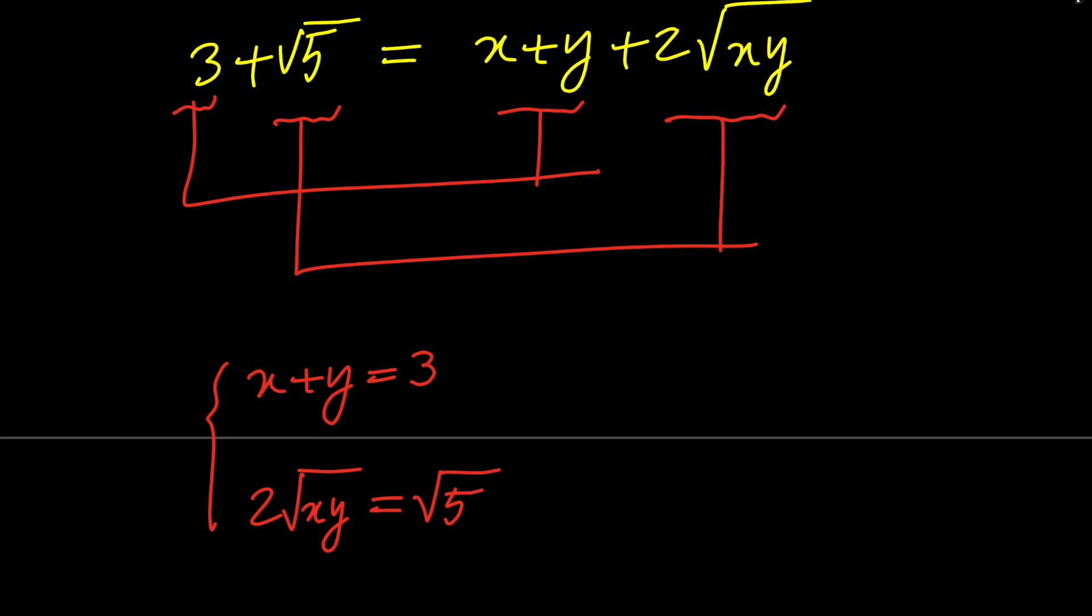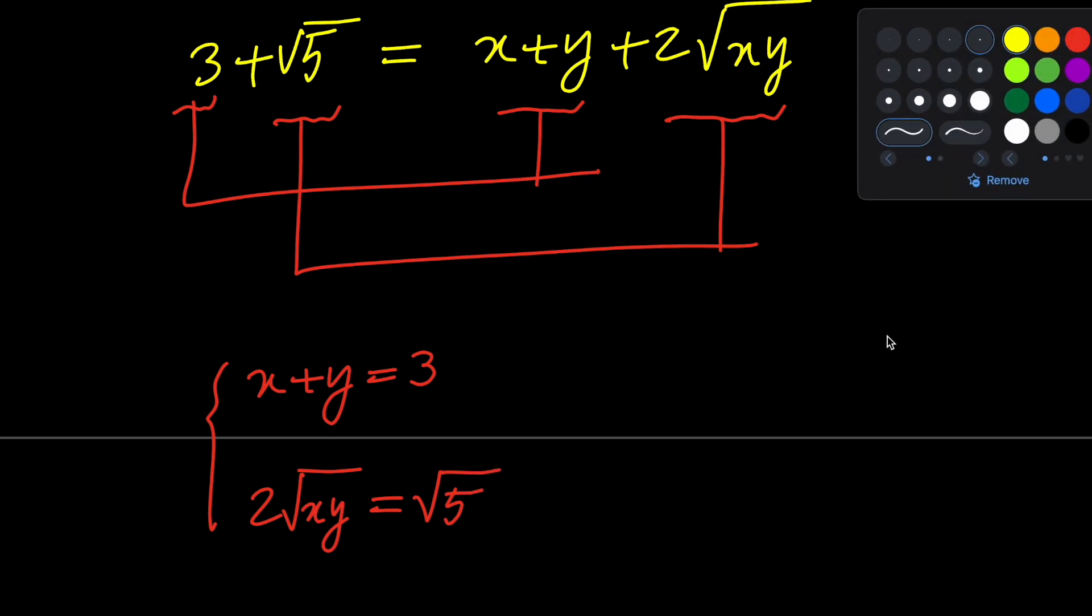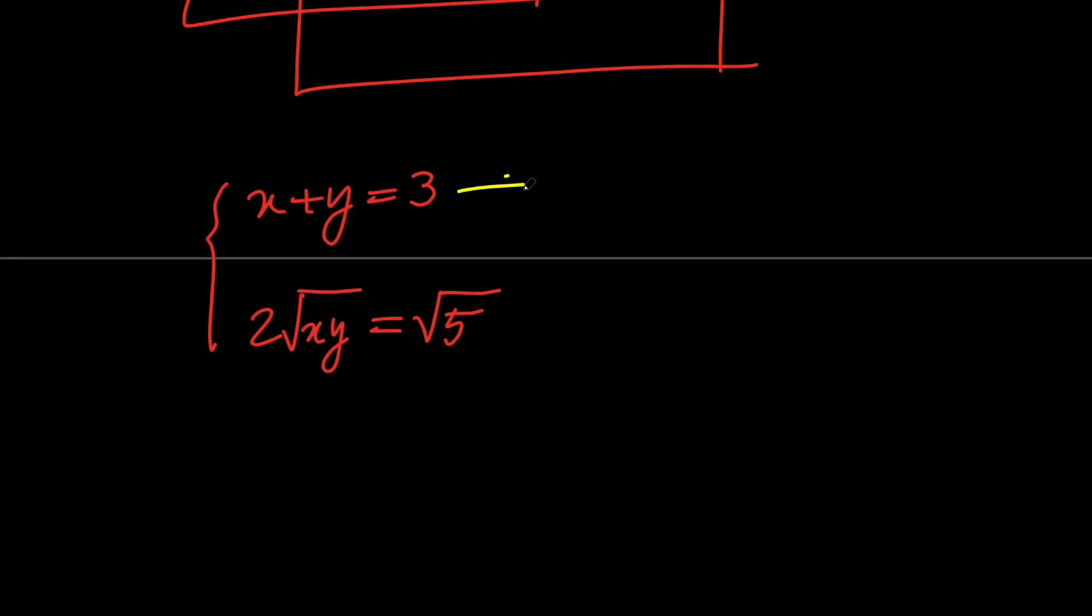So in order to solve this for x and y, let's go ahead and isolate x in the first one. We can say that x equals 3 minus y. And let's go ahead and square both sides of the second one. So from this, we're going to get 4xy equals 5.